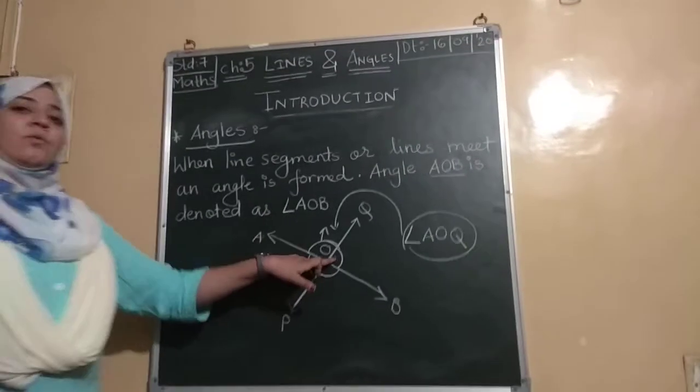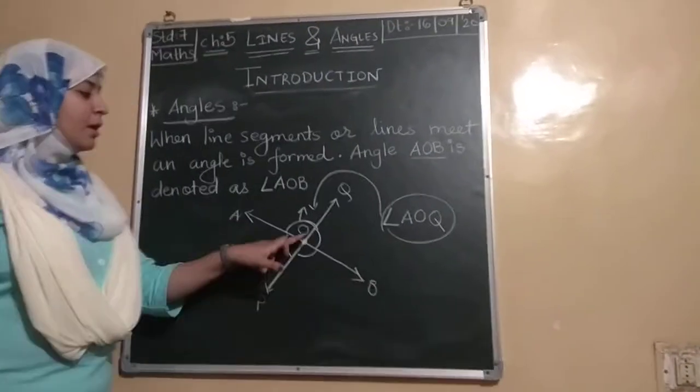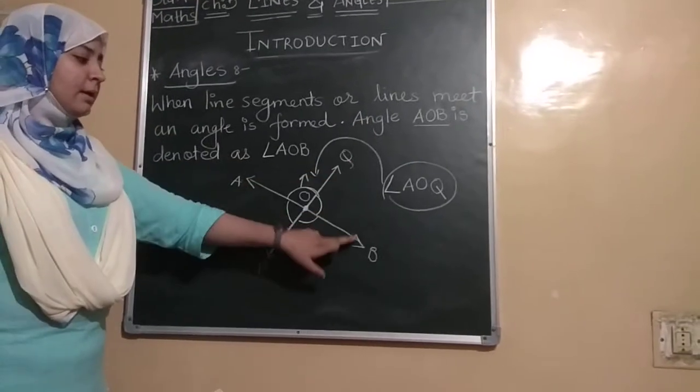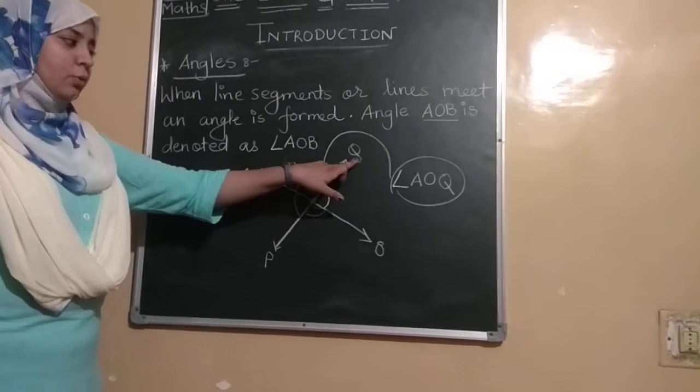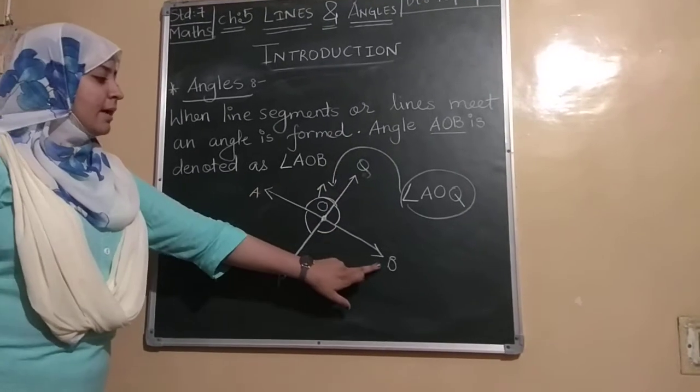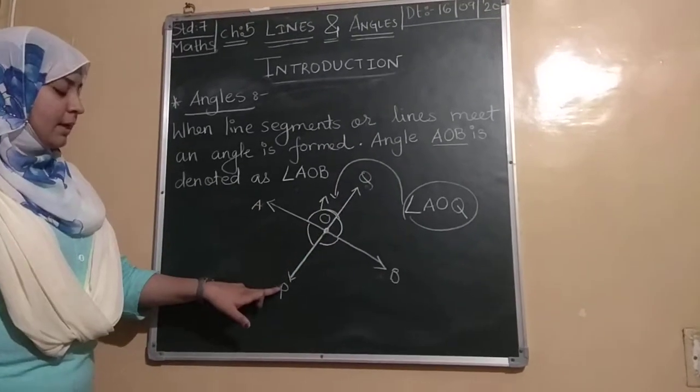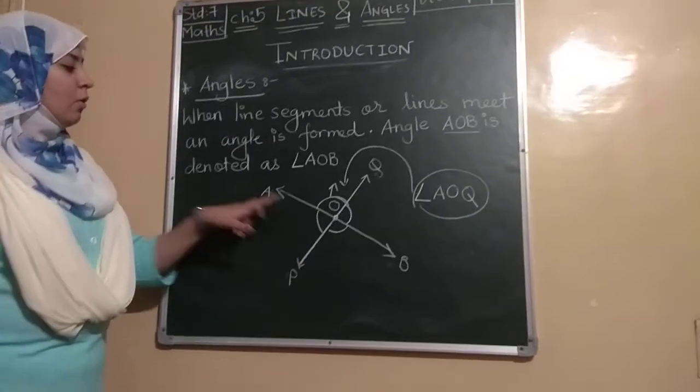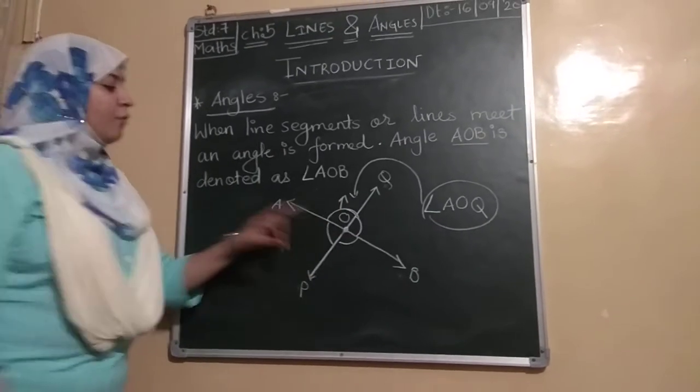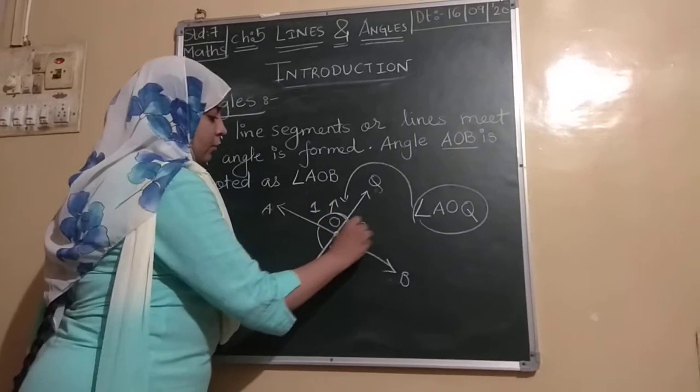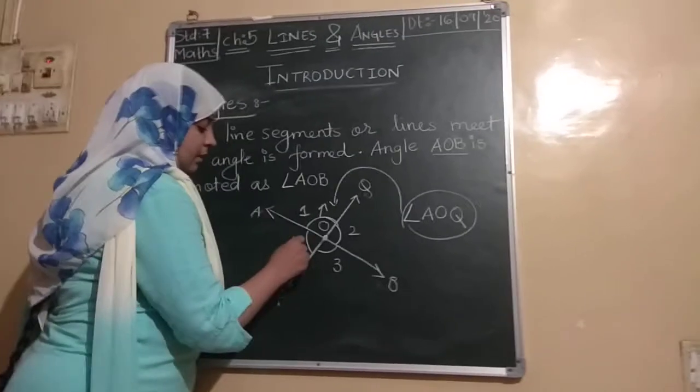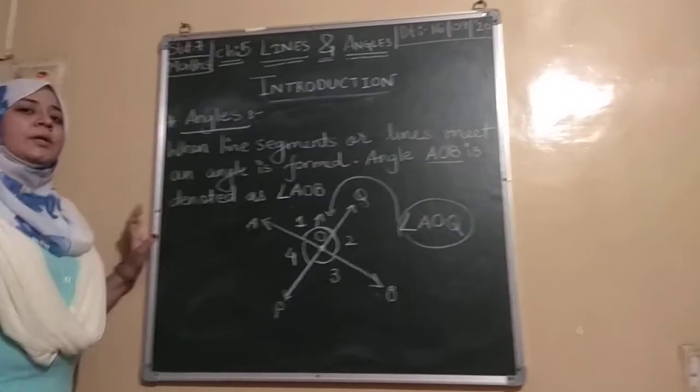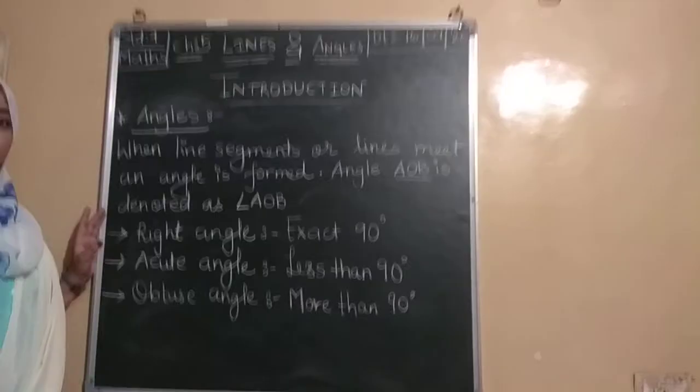If we want to give here, then similarly, you can make B, O, Q, Angle BOQ. Next, you can write B, O, P, Angle BOP. And from here, P, O, A. How many angles are formed here? Four angles. Understood what is angle? Very good.